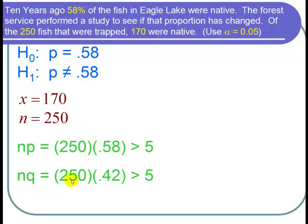nq is 250 times q which is 1 minus 0.58, or 0.42, and that's also much bigger than 5. So we can use the normal distribution for this hypothesis test.